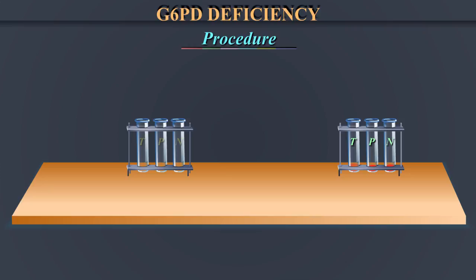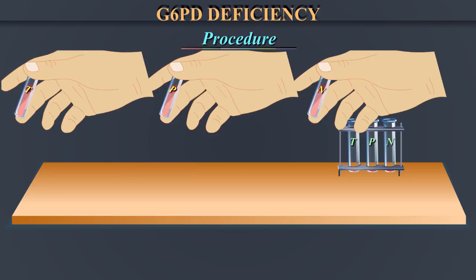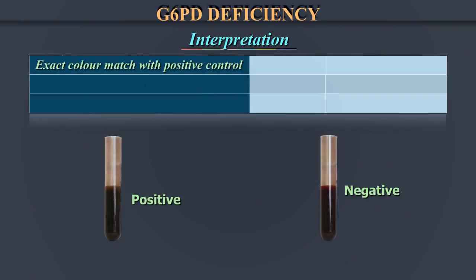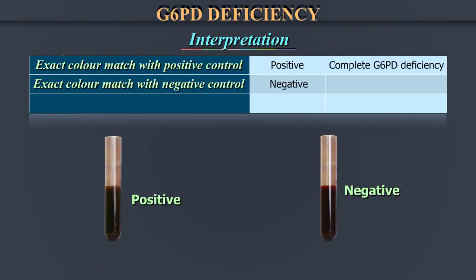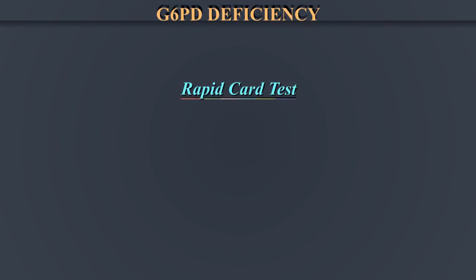Step 3: Take 3 new test tubes and once again mark them as test, positive, and negative control. Add 10 ml of distilled water to each tube. Now take 0.1 ml aliquots from the corresponding original tubes and add to these new tubes. Step 4: Mix by repeated inversions and wait 2 minutes for the color to develop. Match the color of the test with that of the positive and negative control tubes. Step 5 — Interpretation: An exact color match with the positive control is positive or reactor, meaning complete G6PD deficiency. An exact color match with the negative control means negative or non-reactor, meaning no G6PD deficiency. An intermediate color development means intermediate reactor, meaning partial G6PD deficiency.